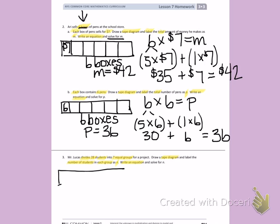So I'm drawing my tape diagram. Mr. Lucas has 28 students in his class. He makes 7 equal groups. I do not know how many students are in each group, so I'm going to label that as N. I do also need to remember to label 7 groups.